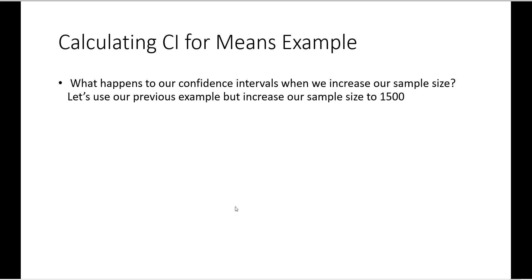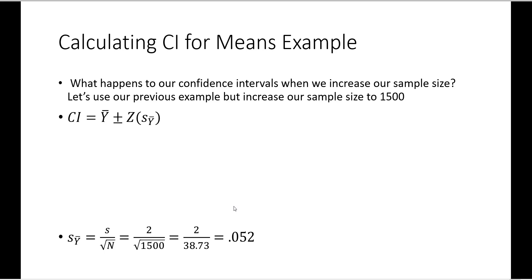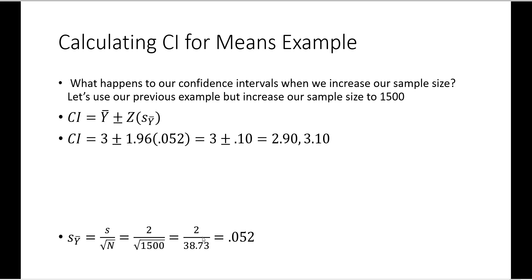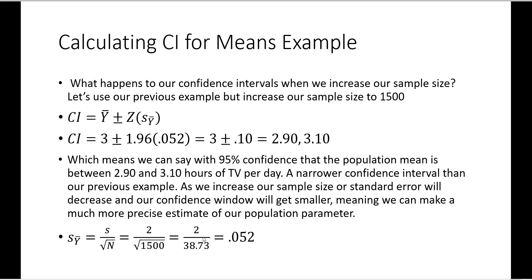What happens to our confidence intervals when we increase our sample size? Using our previous example but increasing the sample size to 1,500, you notice that when we calculate the standard error now, it has decreased significantly because our sample size has increased. Previously, our standard error was 0.16; now it is 0.052, much smaller. When we plug that in, we end up with a much narrower confidence interval, and we can say with 95% confidence that the population mean is between 2.9 and 3.1 hours of TV per day.